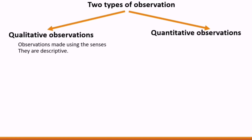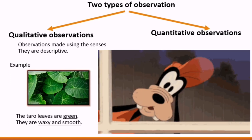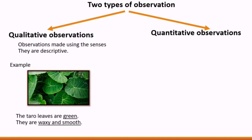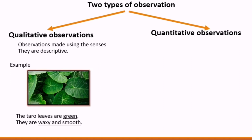In qualitative observations, we use the senses, and they are descriptive. For example, look at that picture — that is a taro plant. Now using the five senses and qualitative observations, let us describe the picture. First, the taro leaves are green. By describing it as green, it means you use your sense of sight. Next, they are waxy and smooth. Waxy and smooth are described using the sense of touch. So don't forget, when we say qualitative observations, you must use your five senses.